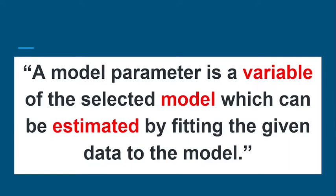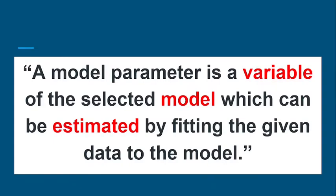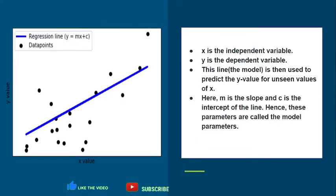The three terms for the model parameter are: they are variable, they are continuously changed, and they depend on the selected model — whether it is a linear regression model or a random forest classifier. The model parameter would be estimated by our model with respect to the given data.